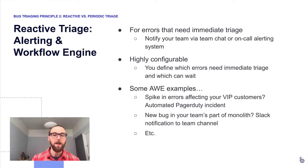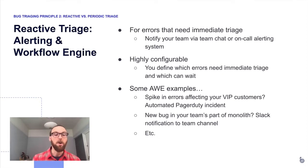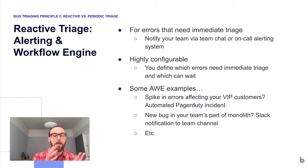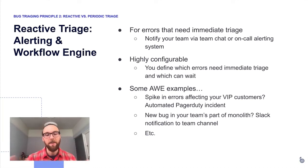For example, if you have a spike in errors affecting your VIP customers — where you define what it means to be a VIP — BugSnag can detect that and automatically open a PagerDuty incident, fitting into your team's existing on-call rotation and bug remediation process. Or, if you work in a monolithic codebase where each team uses a different Slack channel, you can configure BugSnag to notify your Slack channel about bugs in your team's part of the monolith. The possibilities are really infinite from there.